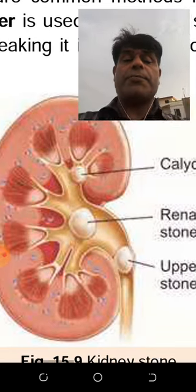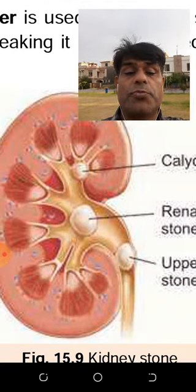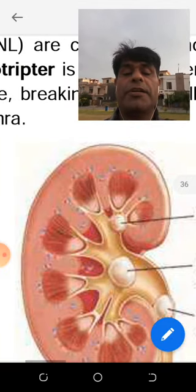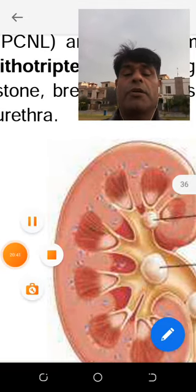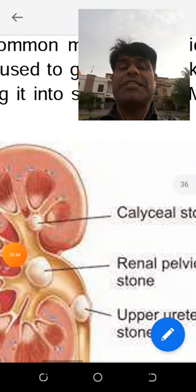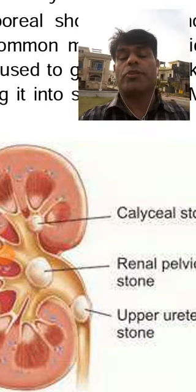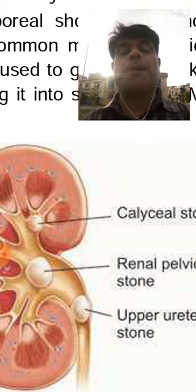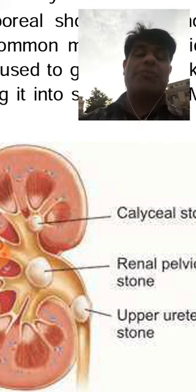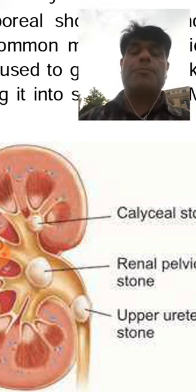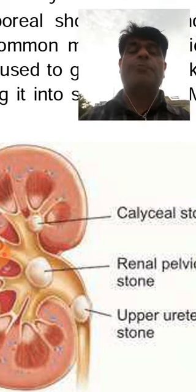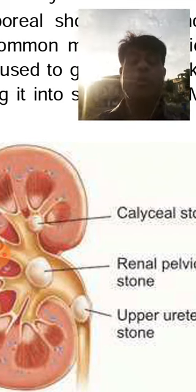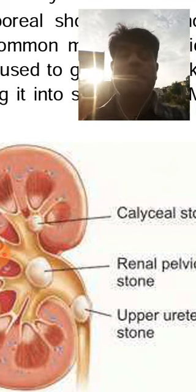The final type today is the calyceal stone, present near the medulla in the papillary ducts. The collecting duct opens into the papillary duct, which opens into the renal pelvis, which opens into the hilum, which opens into the ureter, the ureter into the urinary bladder, the urinary bladder into the urethra, and urine exits through the urethral orifice.